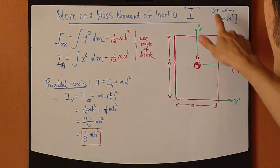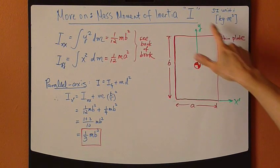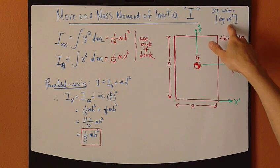Now looking at this definition, the SI unit for mass moment of inertia is kilogram meters squared.